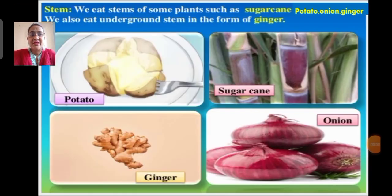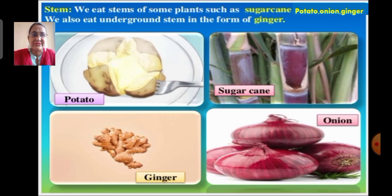Next are edible stems. We eat stems of some plants such as sugar cane, potato, onion and ginger. We also eat underground stems in the form of ginger, onion and potatoes.